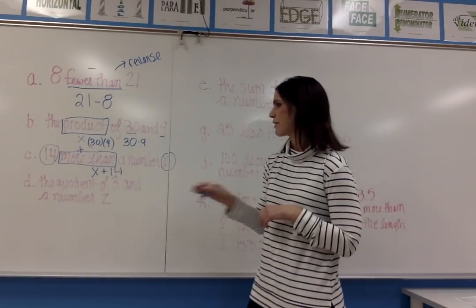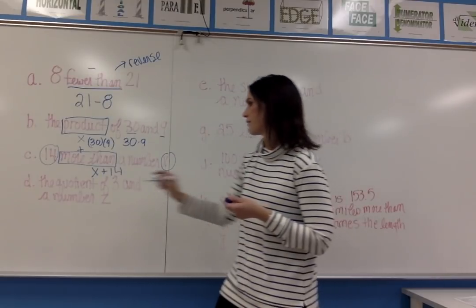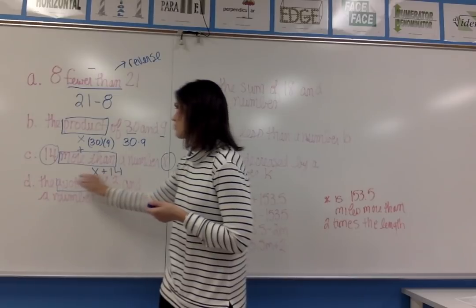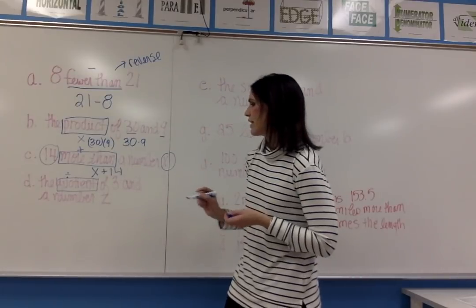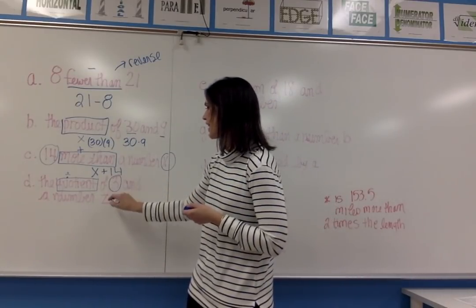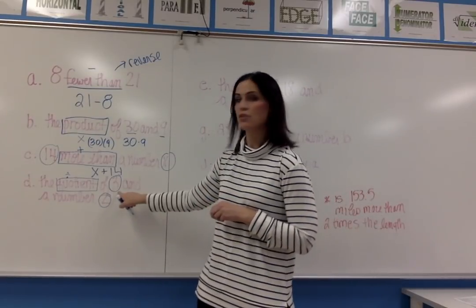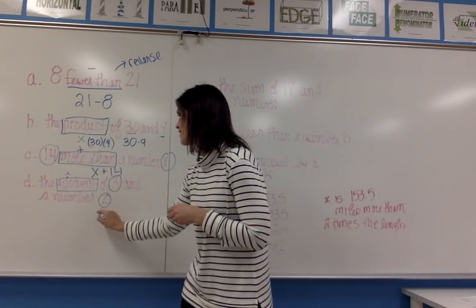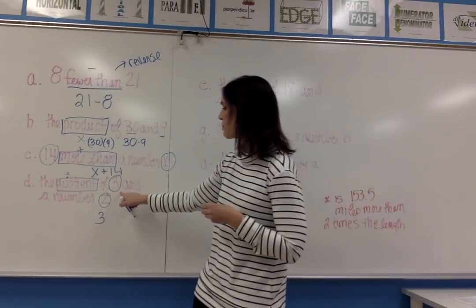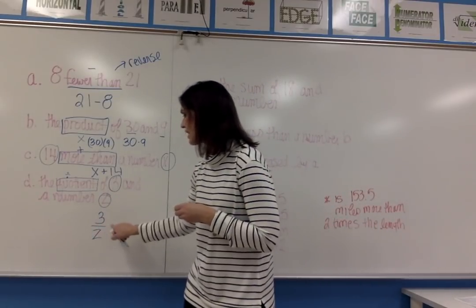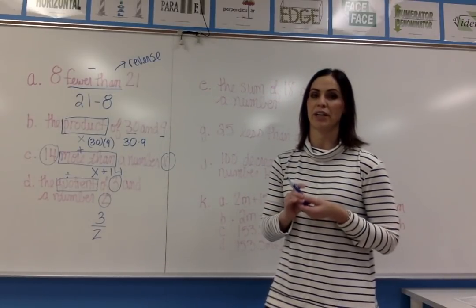My next example says the quotient of 3 and a number Z. The clue word is quotient, which means to divide. It's the quotient of 3 and Z, so this is another algebraic expression. Since 3 comes first, we write that first in fraction form: 3 over Z. This is how you'll commonly see division problems written when working with algebraic expressions.